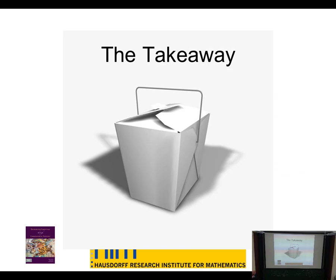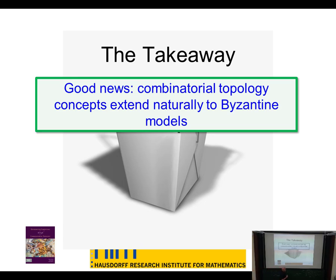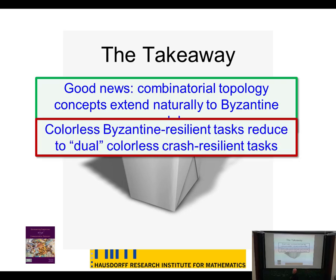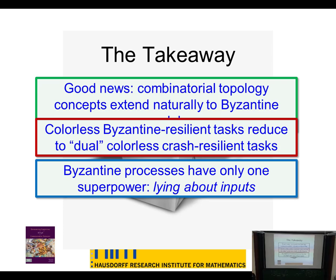To summarize: the combinatorial topological tools developed for crash failure can be extended to Byzantine failure in a fairly straightforward way. The difference — which nobody had noticed before — is only that you can tolerate fewer bad guys. That's true for strict colorless tasks, which most of the tasks we're interested in are. The observation that Byzantine processes have only one superpower — they can lie about their inputs, and if they try to lie about anything else we can catch them — has been implicit in earlier work, but I think we helped clarify the situation.